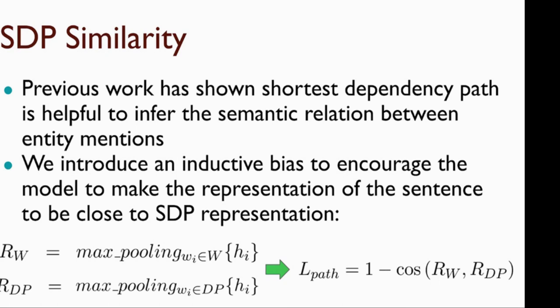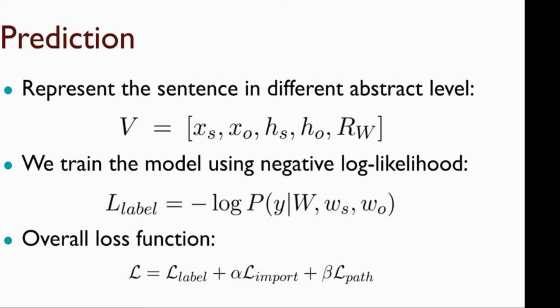Finally, to encode the shortest dependency path information into our model, we are using inductive bias where we encourage the similarity between the sentence representations and the SDP representations. We compute these representations using the max pooling of the words of the sentence and the words of the shortest dependency path. We are using cosine similarity to encourage this similarity between these two representations. For the predictions, we use the representations of the subject and object in different abstract levels and the representations of the entire sentence. We are using the negative log likelihood for the prediction loss, and the overall loss will be the prediction loss, the KL divergence, and the cosine similarity.